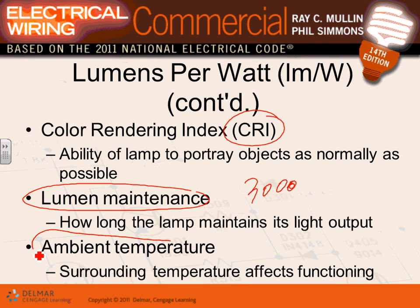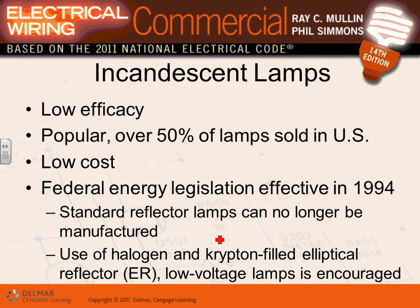Ambient temperature is a major factor — the surrounding temperature affects the function of lamps. Certain fluorescent lights will not work in Minnesota outdoors at 25 below zero; the ballast will not fire under those temperatures. You have to have a special type of ballast that allows operation in extreme cold — especially for outdoor fixtures or freezer applications. The ambient temperature will affect the performance of these fixtures.